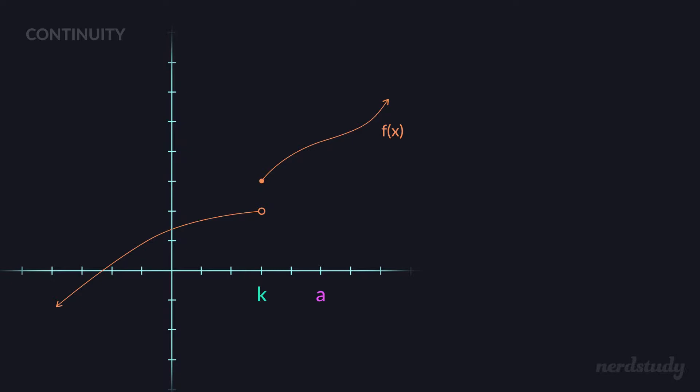Of course, this casual approach would not be enough in mathematics, so we're going to go through a more mathematical way to think about the idea of continuity at a point. What we're going to use is the concept of a limit — something that we learned earlier — to help us really understand what it means for a graph to be continuous at a certain point.